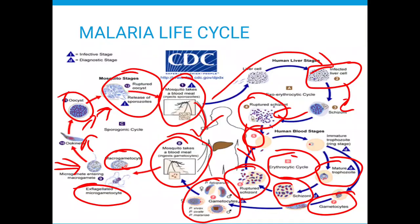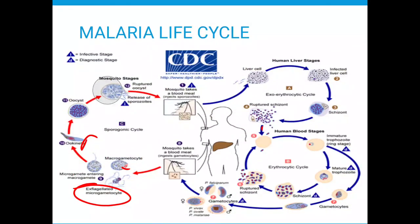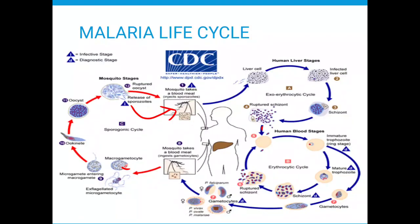When the sporozoites are released, they migrate to the salivary glands of the mosquito. At this point, all that needs to happen is for this mosquito to bite another human being and the life cycle continues. That is the life cycle of malaria. Thank you so much for taking time to listen to this life cycle — till next time.